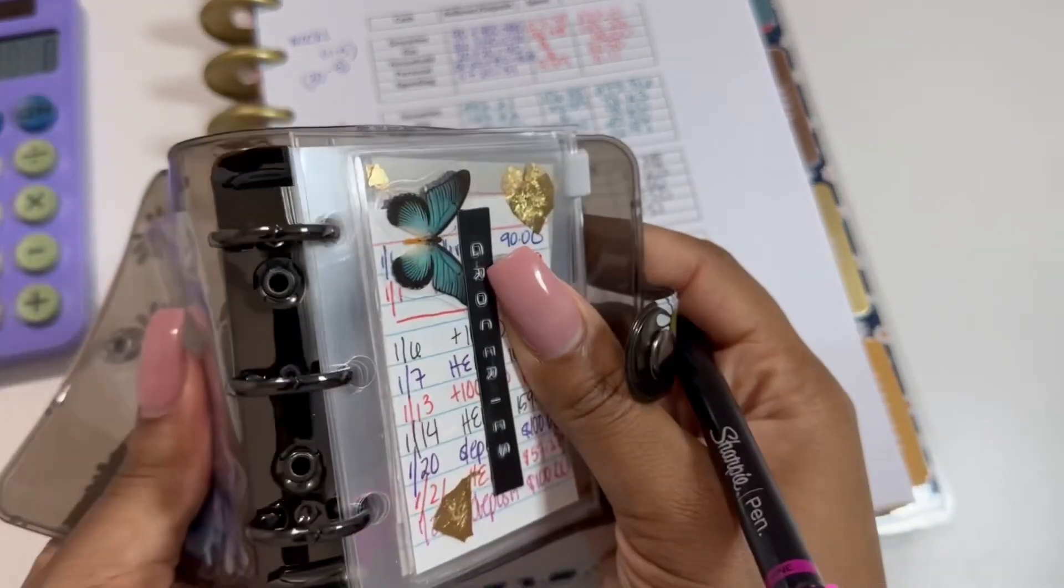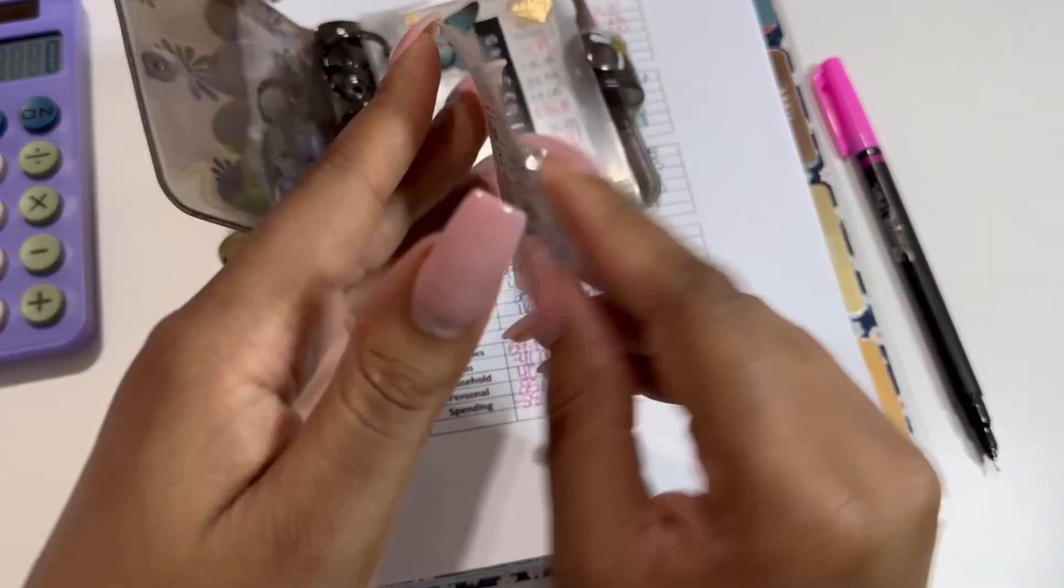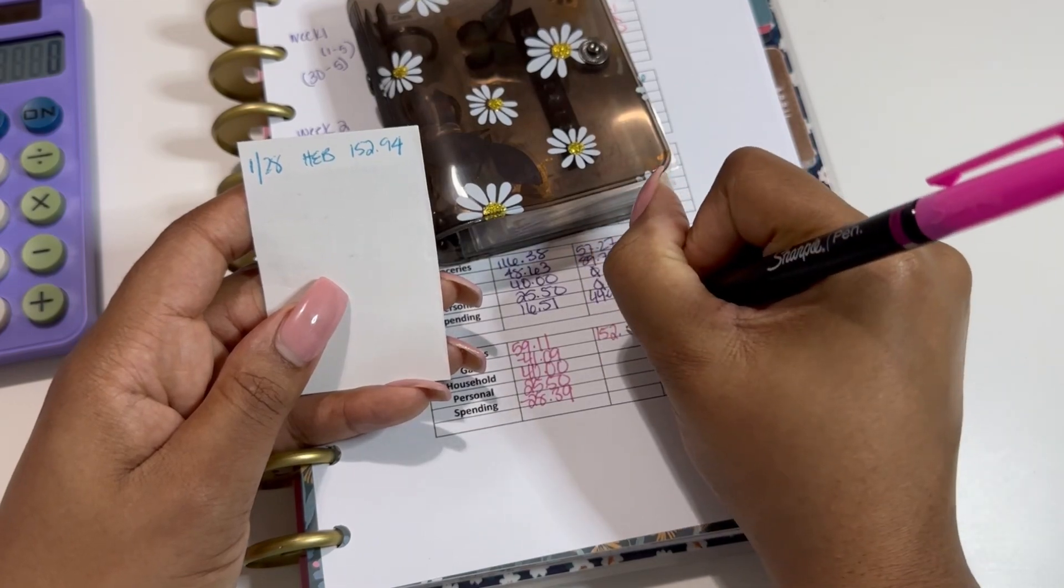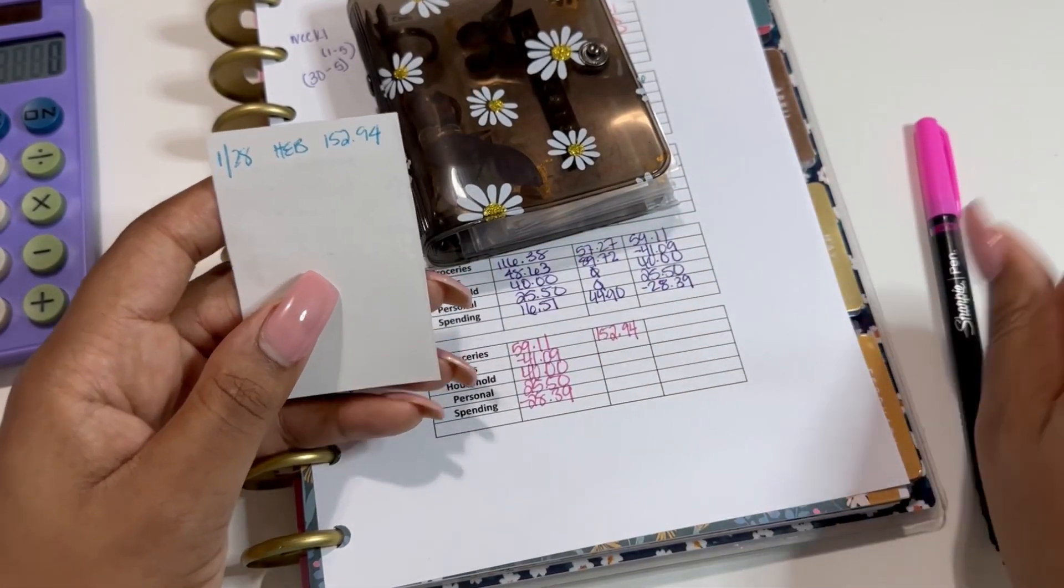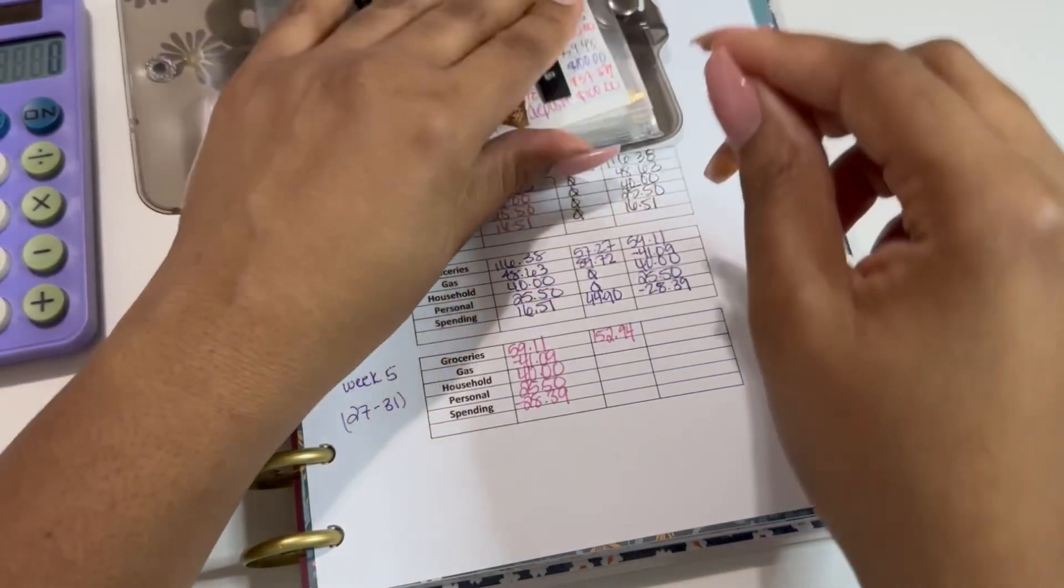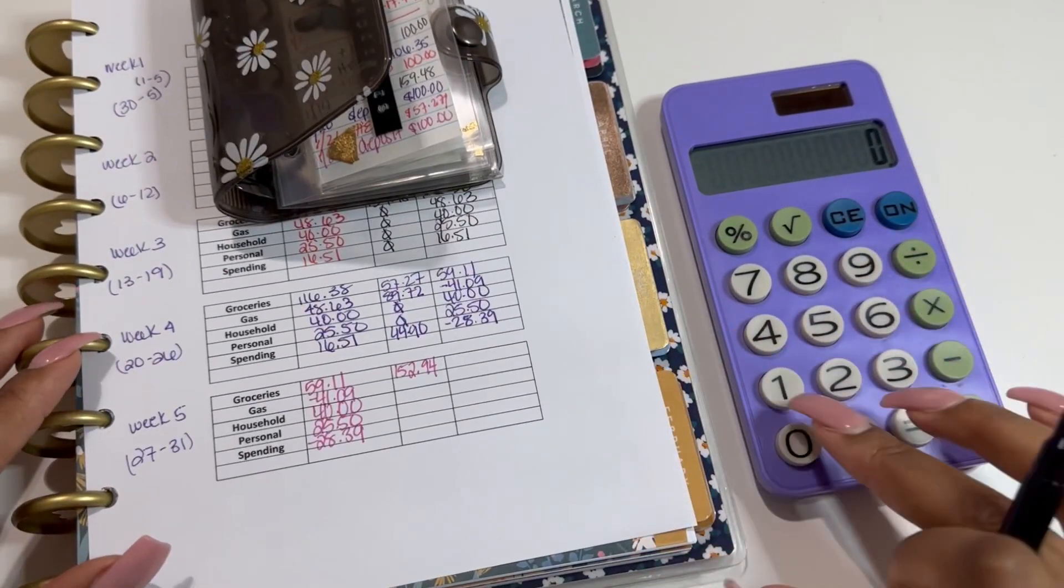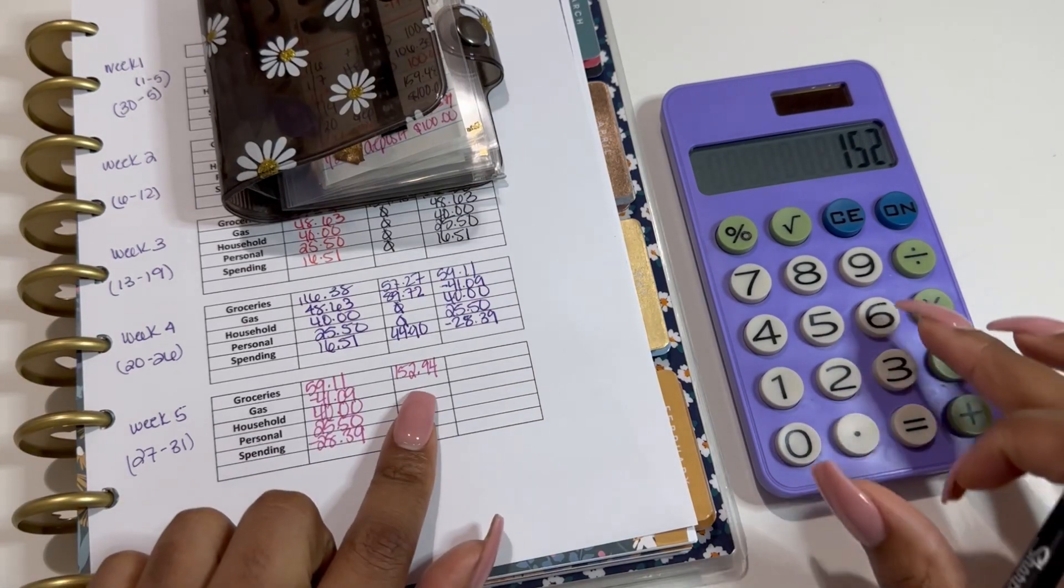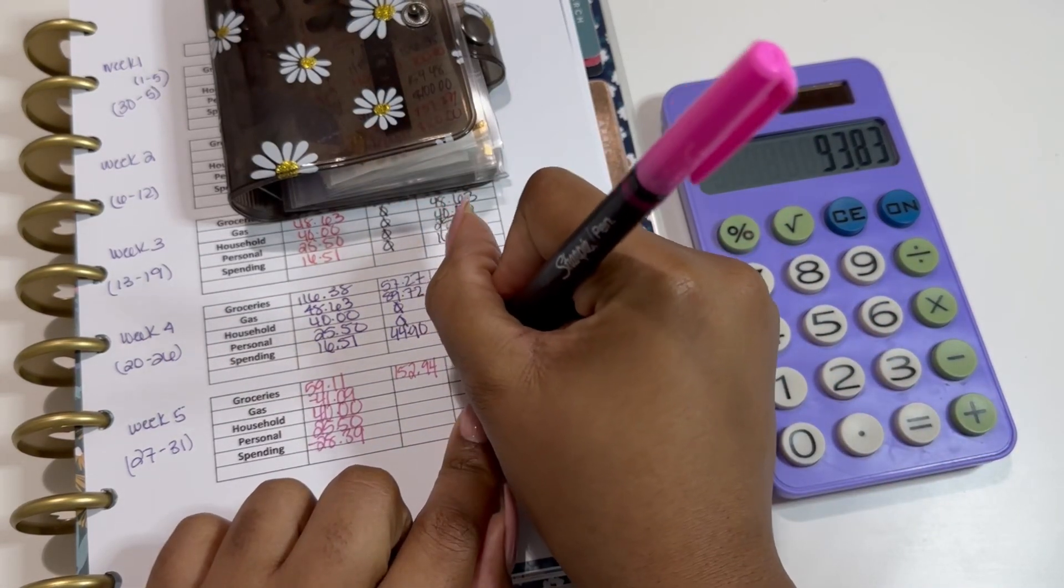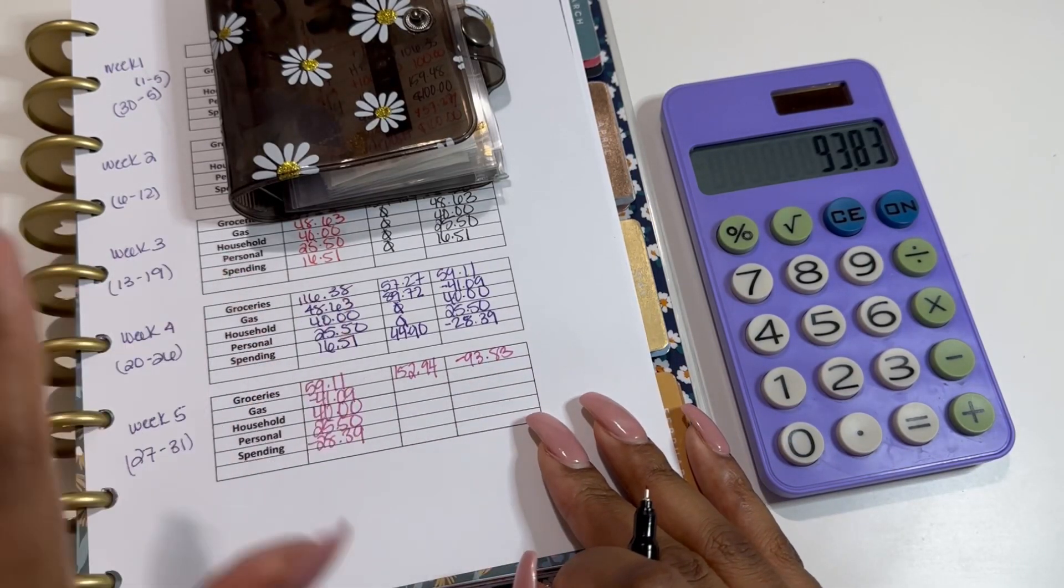So we're gonna open up my cashless cash envelopes. For groceries, y'all don't even want to know what I got for groceries. I went to HEB and I spent 152.94. I'm not even gonna lie to y'all, I feel like my feelings will be hurt, but they're really not that hurt. I bought what I needed to get and I just gotta do what I gotta do. So we are going to do 152.94 minus 59.11, so we are over budget by 93.83.